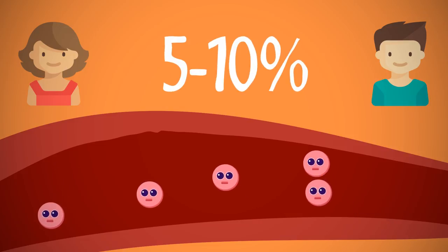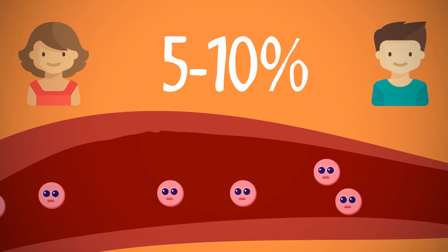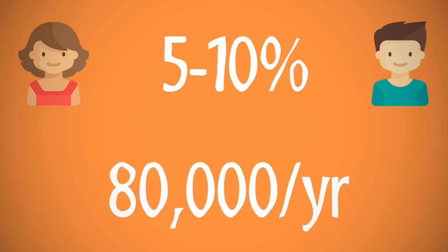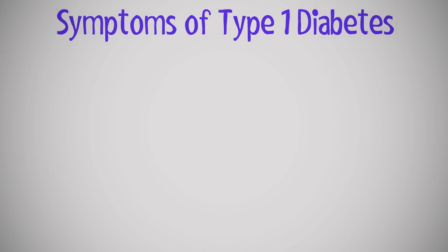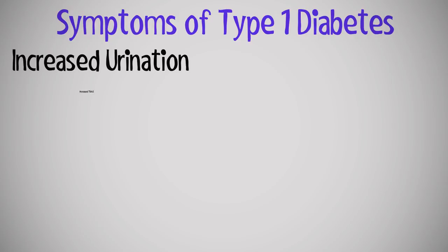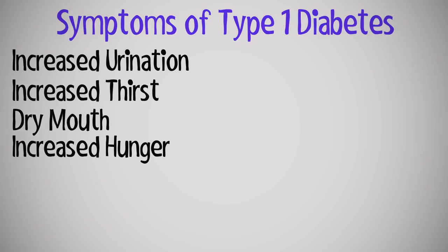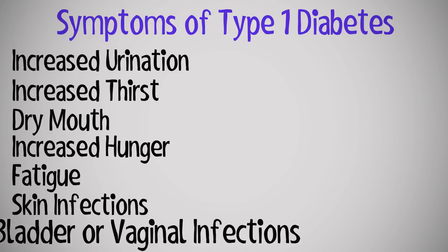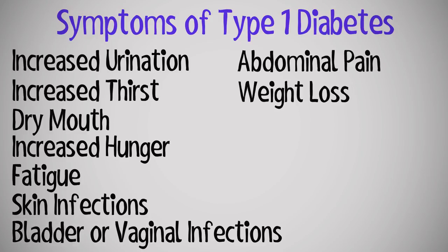Five to ten percent of all diabetic cases are type 1 diabetes. It is estimated that 80,000 children develop this disease each year. Symptoms of type 1 diabetes include increased urination, increased thirst, dry mouth, increased hunger, fatigue, skin infections, bladder or vaginal infections, abdominal pain, and weight loss.